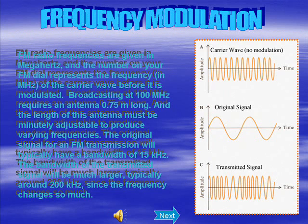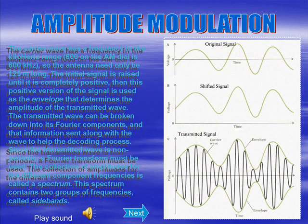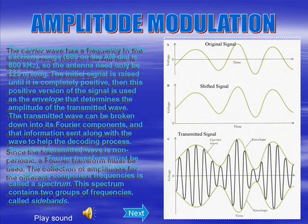Since the transmitted wave is non-periodic, a Fourier transform must be used. The collection of amplitudes for the different component frequencies is called the spectrum, and this spectrum contains two groups of frequencies called sidebands and upper bands. In the diagram, A is the original signal, B is the shifted signal, and C is the transmitted signal, in which an envelope can be seen clearly.